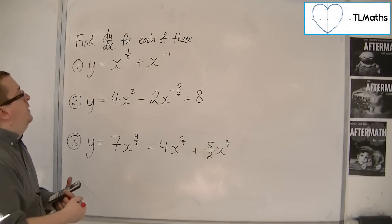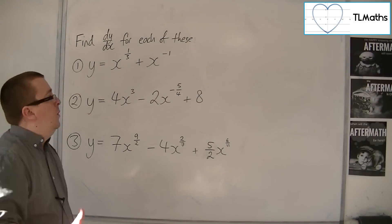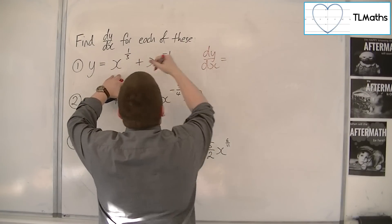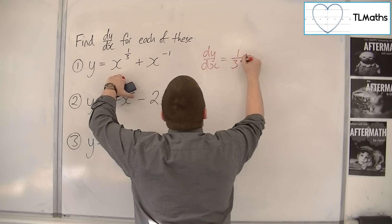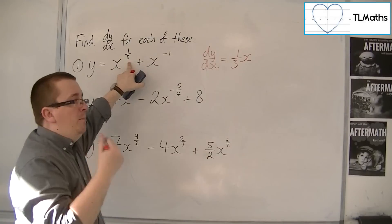Okay, so for this first one, y = x^(1/3) + x^(-1). So dy/dx, the third comes down to the front, so we get (1/3)x, and then we take one off the power. One third take away one is minus two thirds.